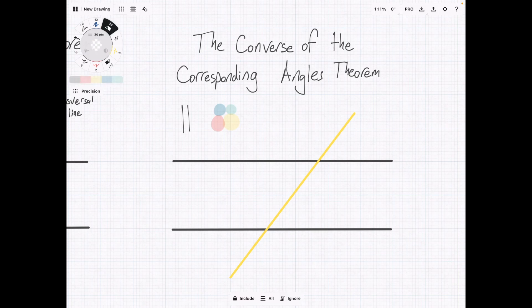So, if you are given information about congruent corresponding angles, you can infer that the lines are parallel.